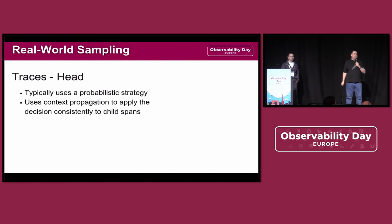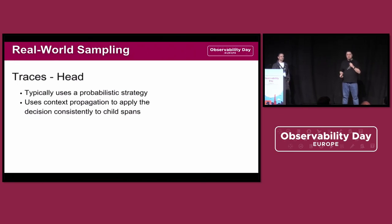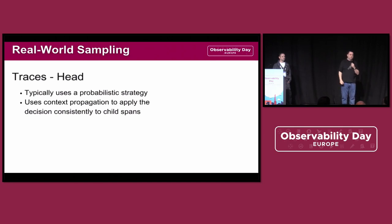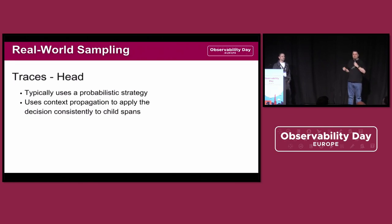Head-based sampling is applied at the very beginning of the trace and we typically use a probabilistic strategy for that. We can use other strategies as well, but typically with head sampling we're making a decision based on probability. So we say that for service X we are selecting only 50% of the data, and we include that decision in the context propagated down to other spans for that same trace.